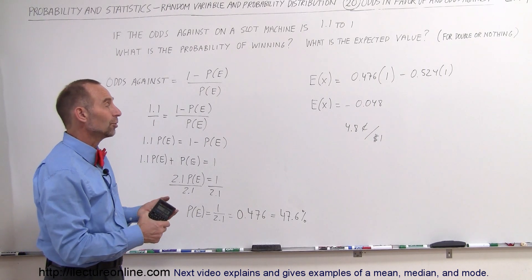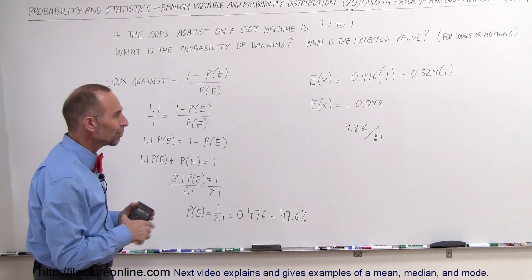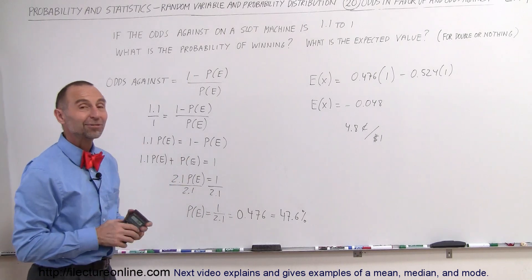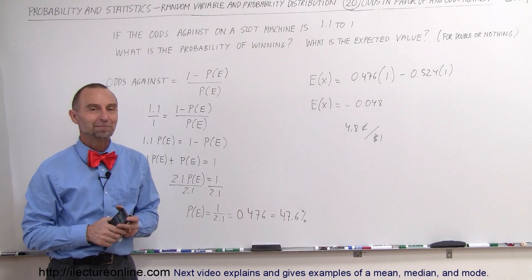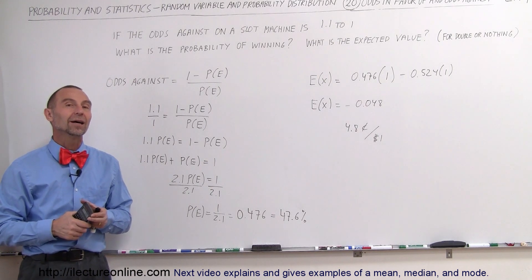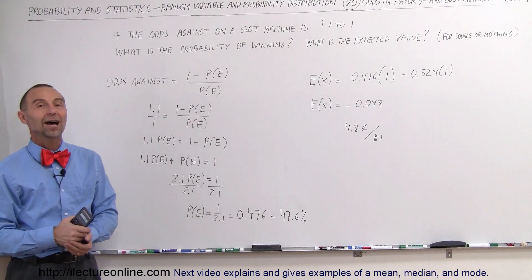So if that's worth it to you, if the fun of putting 4,000 quarters in the slot machine and pushing that button is worth losing $48, then that's what you do, and have fun. All right, so now hopefully you'll understand a lot better what we mean by odds against and odds in favor of. And that's how it's done.